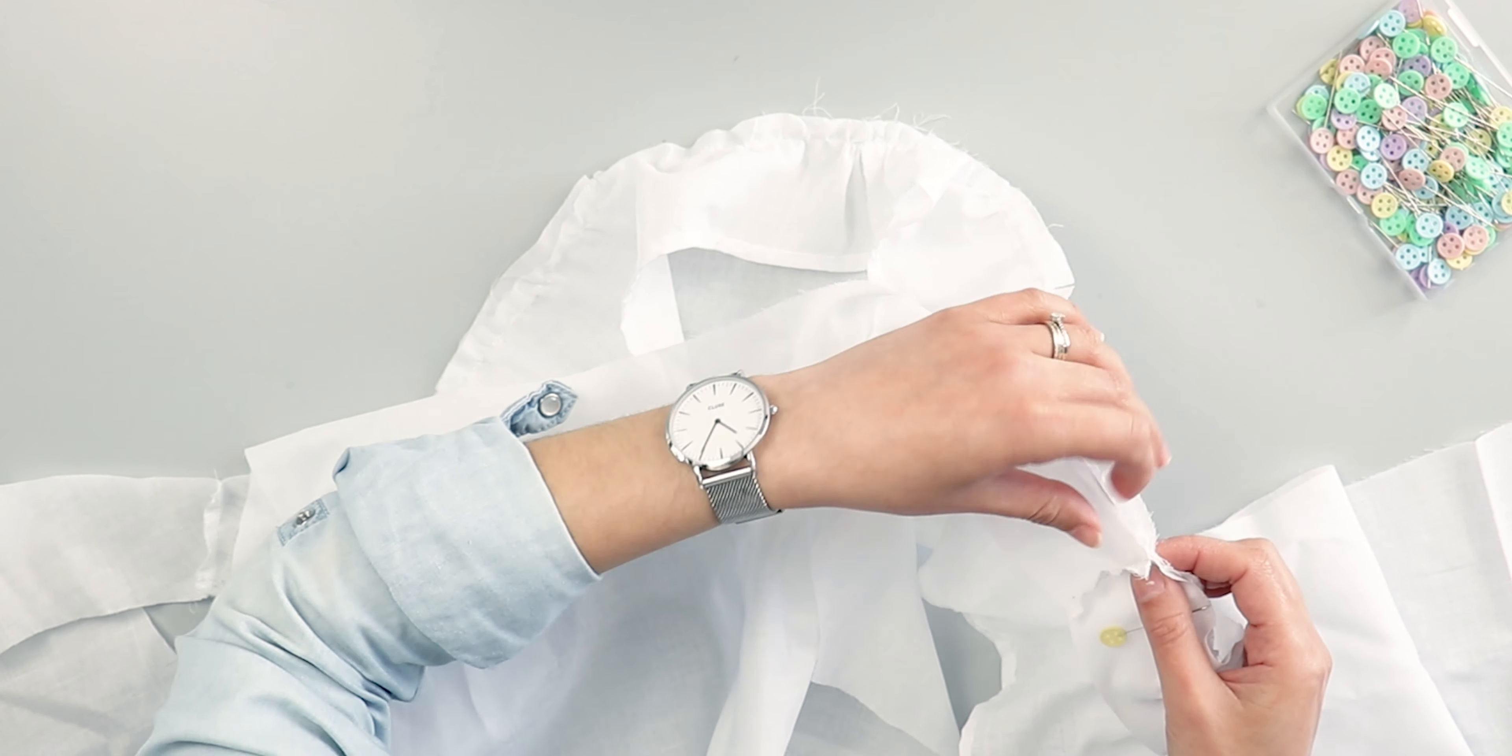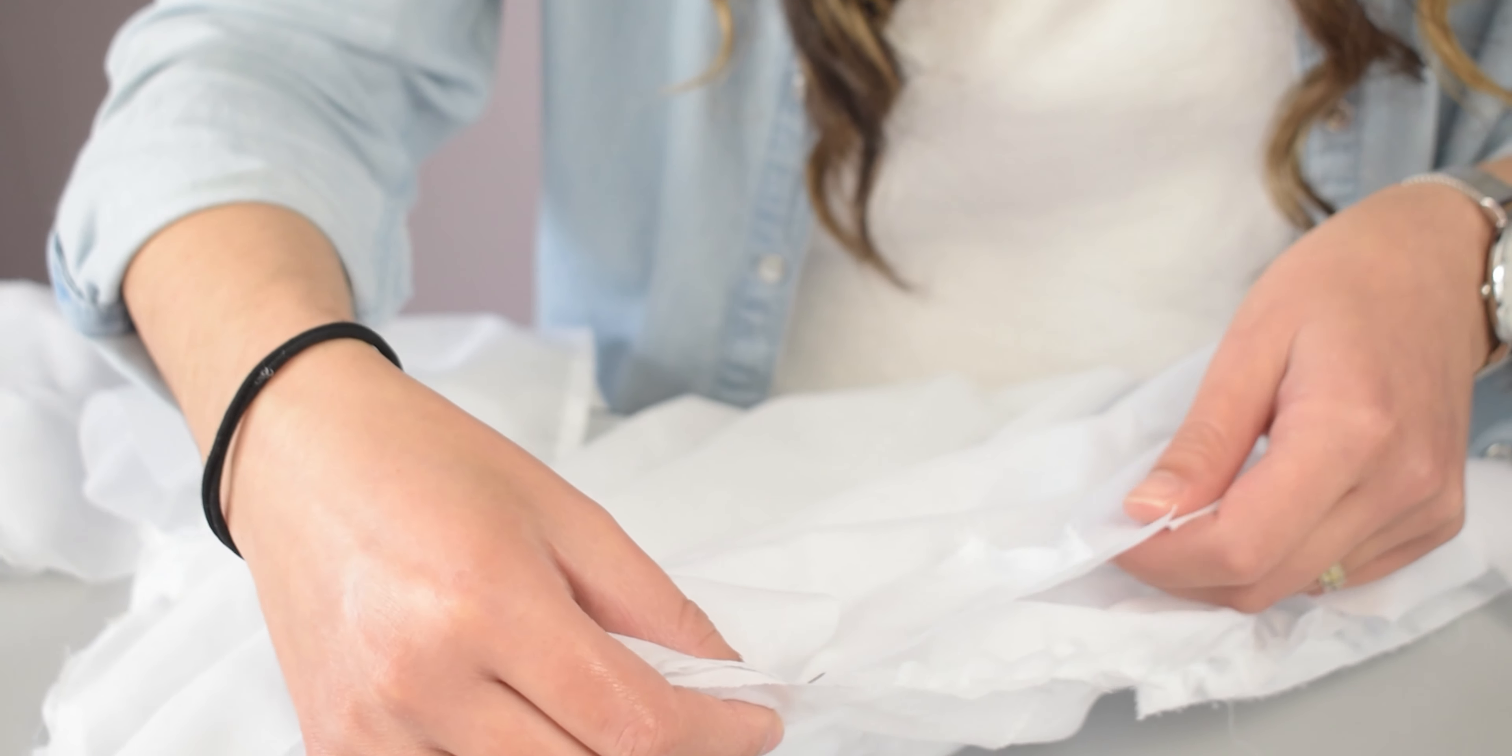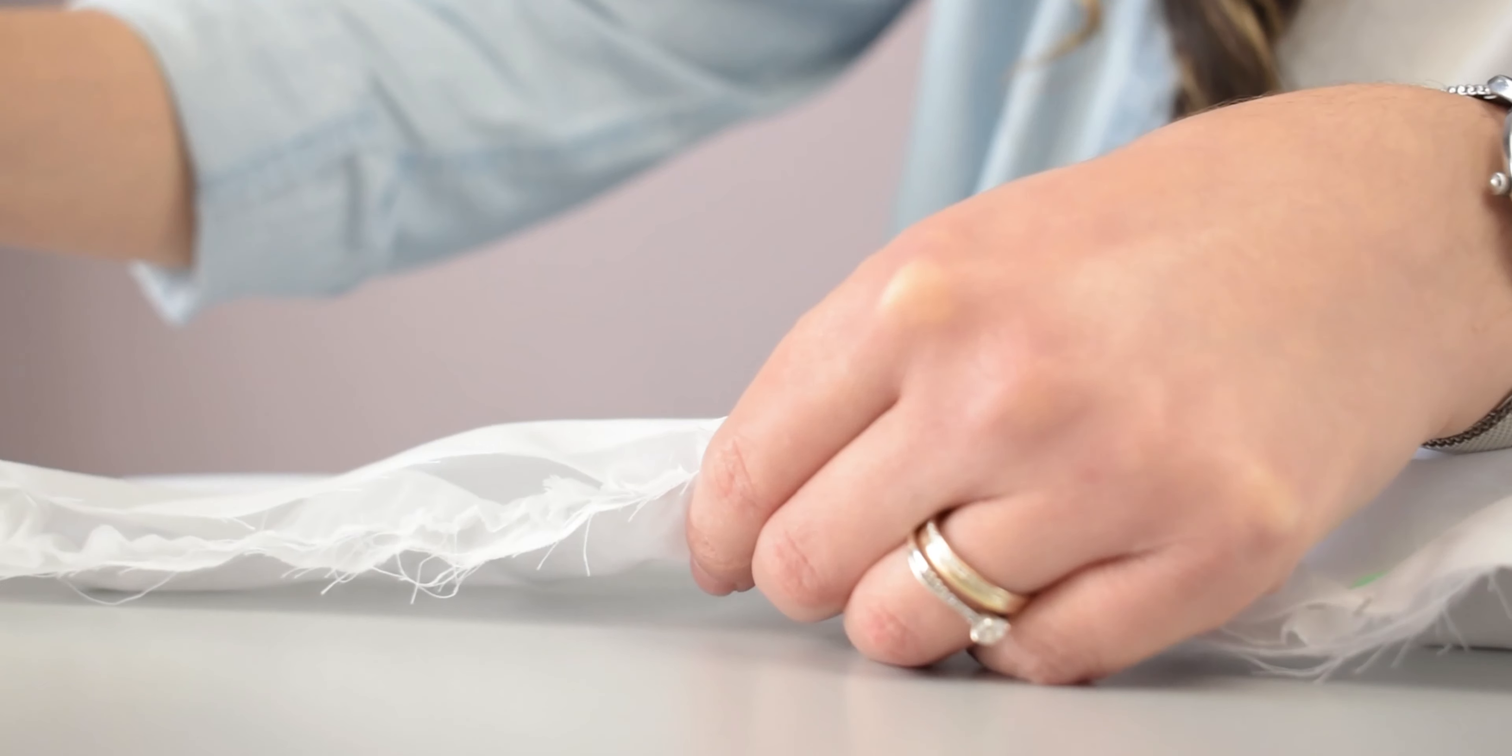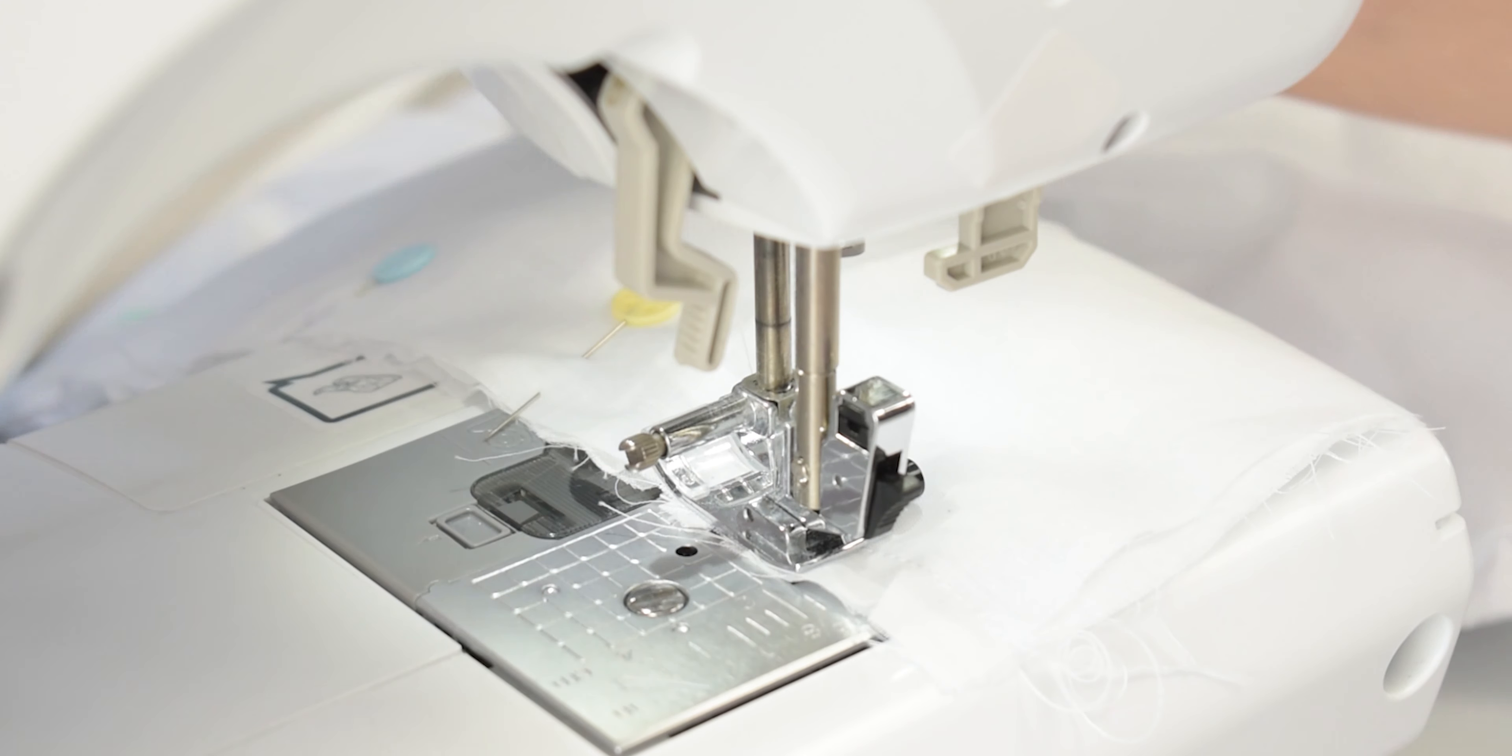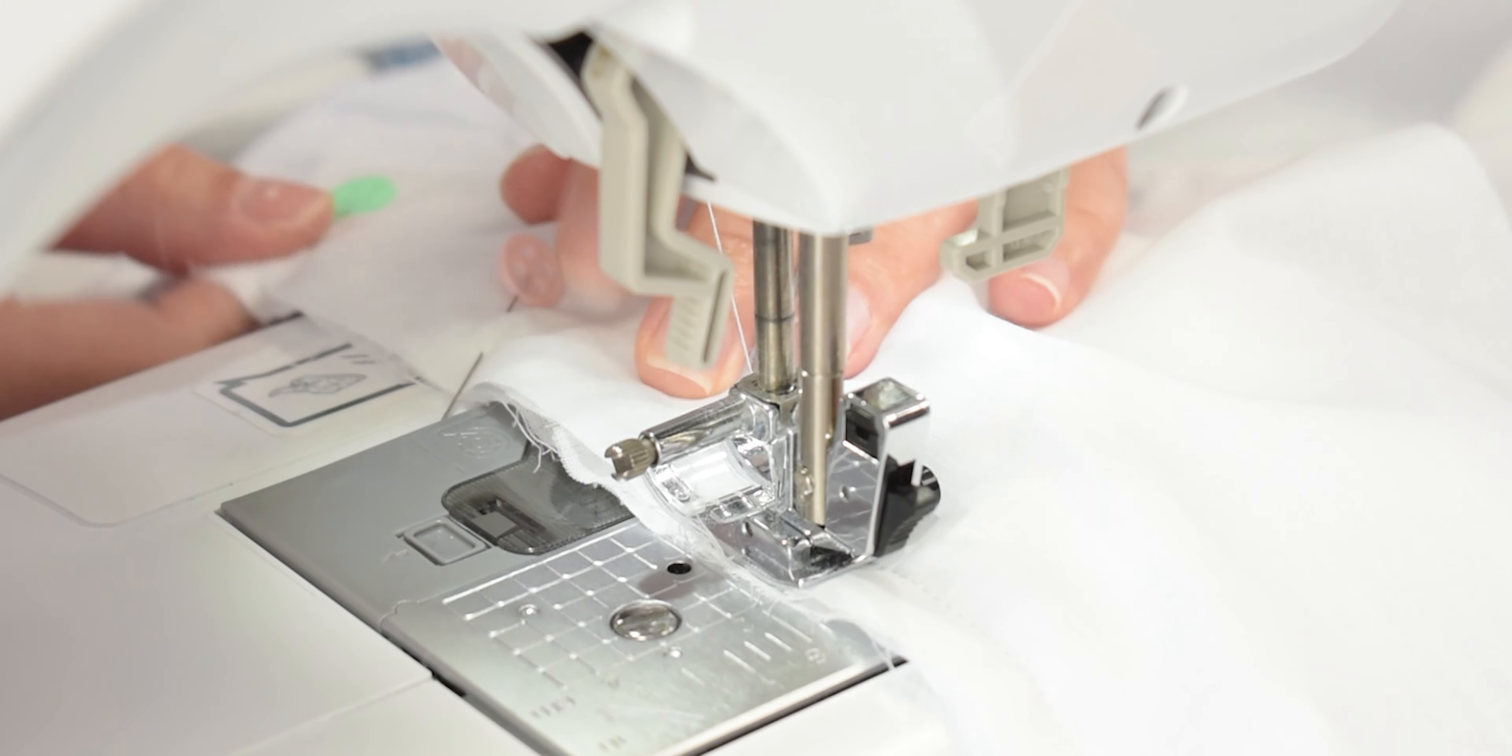Pin and sew the main two pieces together, making sure that the markings match. Then, overlock the same edge and iron the seam towards the center front.